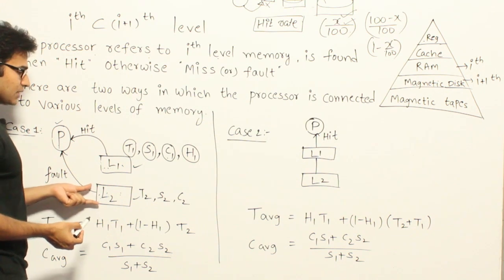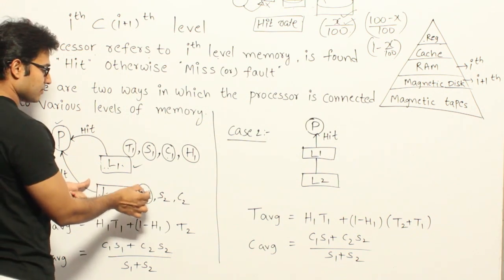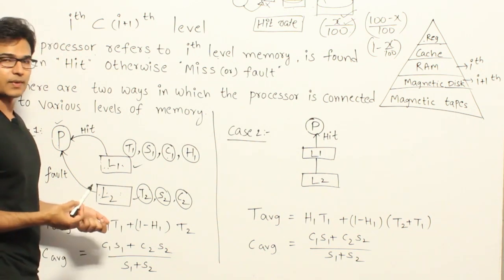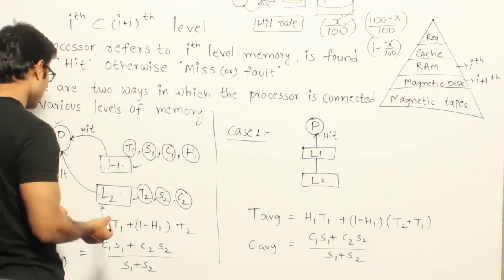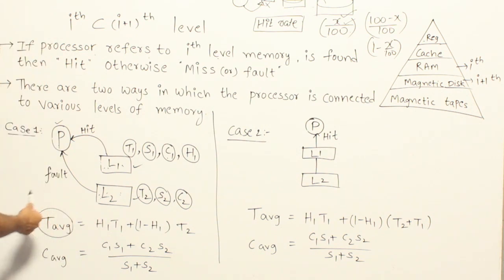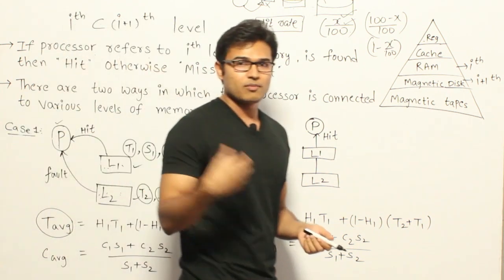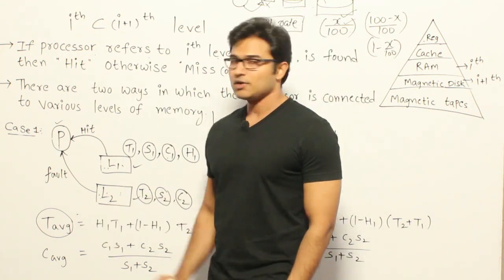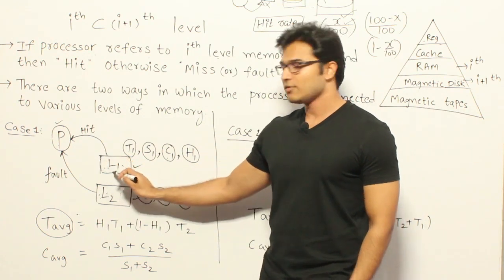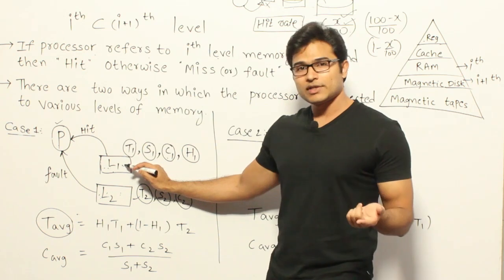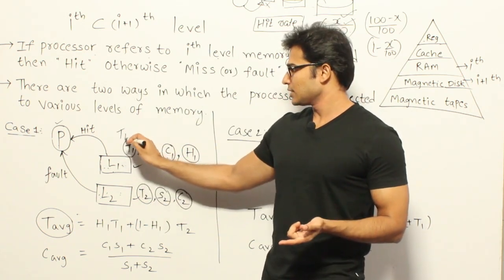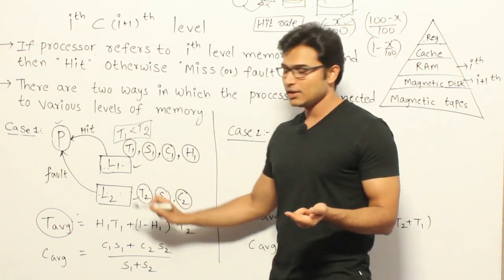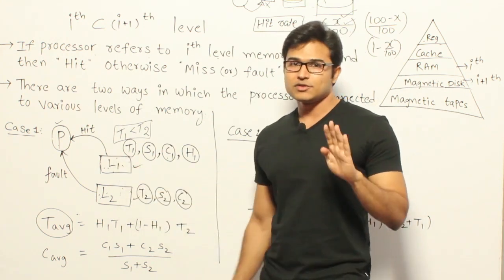For the second level, T2 is the access time, S2 is the size, and C2 is the cost per byte. H2 is not required here. Now, if you are searching for an item and it is present in the cache, it is a hit and the access time is T1. If we are searching in parallel, whenever there is a hit, we get the word in time T1. If there is a miss in L1, since both are searched simultaneously, you can get it from L2 without any additional delay beyond T2.